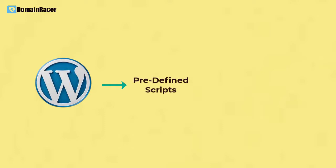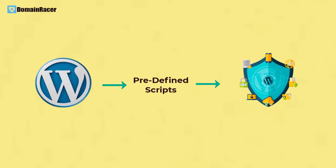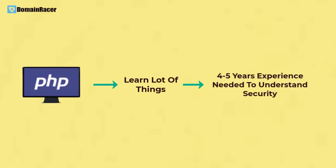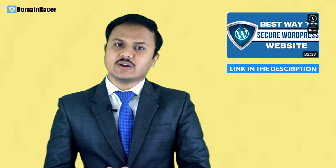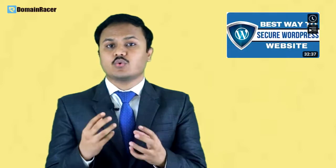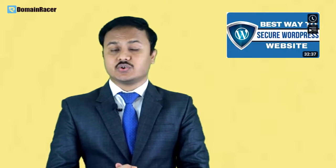When building a website with WordPress, it already has predefined scripts that allow you to secure your site very easily. We can give the highest security score to WordPress. With PHP, however, you need to learn a lot — you must have at least four to five years of experience to gain a deep understanding of security and avoid code-level vulnerabilities. A link to secure your WordPress is in the description; you just follow simple steps without needing any programming knowledge.